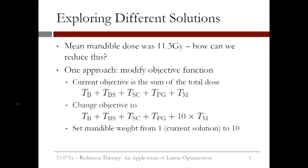One approach is to modify our objective function. Our current objective is to minimize the sum of the total dose to each critical structure — the brain, brain stem, spinal cord, parotid glands, and mandible.